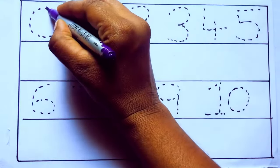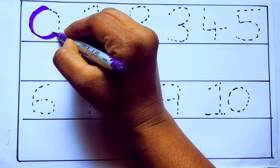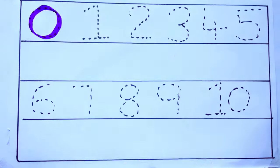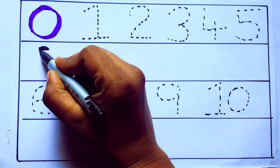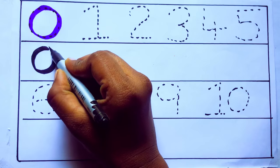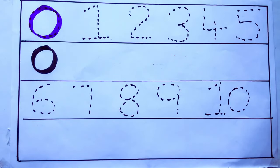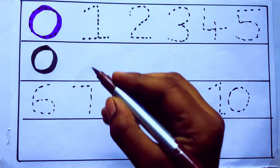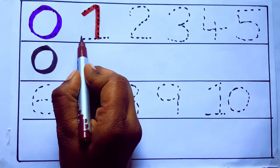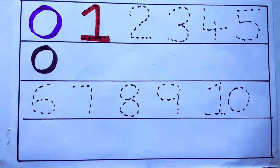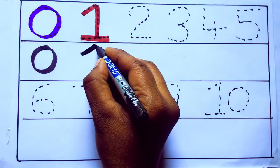Violet color, 0, zero. Brown color, 1, one. Number 1.